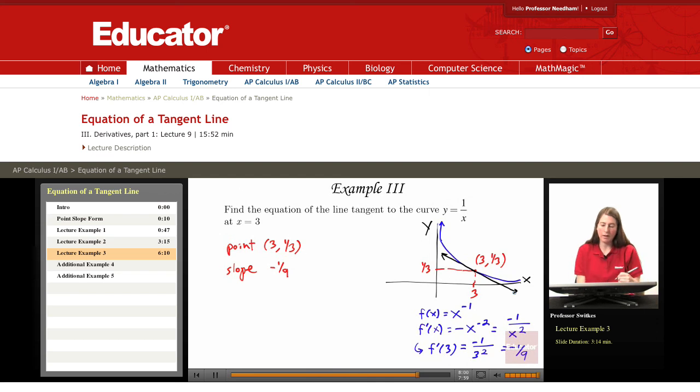Notice that this tangent line is going to have a positive y intercept. It's going to cross the y axis somewhere up here. And so when we put our result in slope intercept form we should see a positive y intercept.